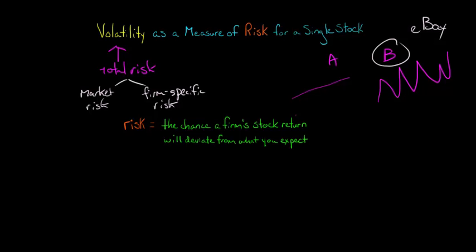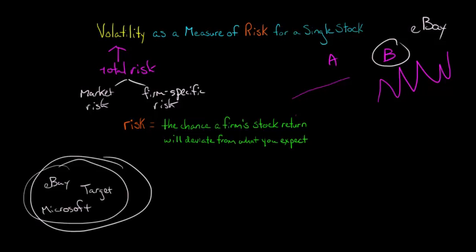When you're an investor, you can build a portfolio of firms. Where you not only have eBay, you also maybe have Target, you have Microsoft, you have a number of firms. And as you increase this portfolio and include more and more firms, you're going to be reducing your volatility. Your volatility of the portfolio is going to go down.